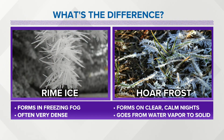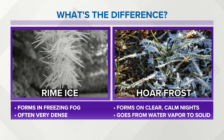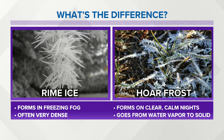Both hoarfrost and rime ice are defined as the deposit of crystals formed by either direct freezing or sublimation on objects — usually smaller items that are freely exposed to air, such as tree branches, plants, wires, and power poles.